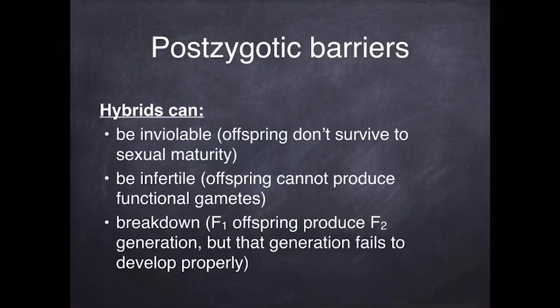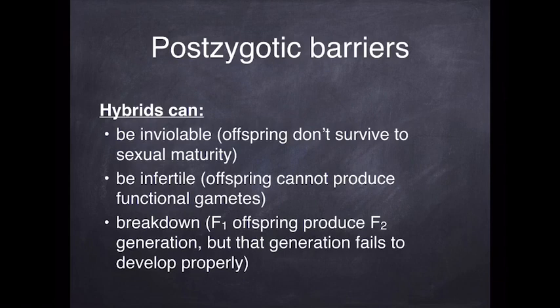All of these barriers result in sympatric speciation taking place — speciation where organisms live in the same environment but are reproductively isolated from one another. There is no gene flow between individuals, and micro-evolutionary mutations and changes accumulate over time, with the result that eventually speciation occurs.